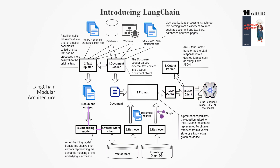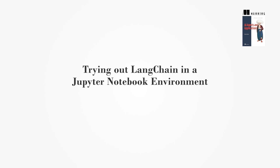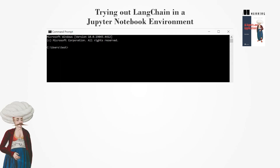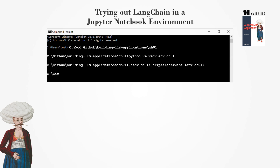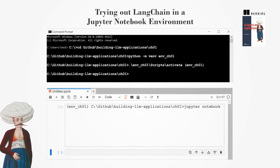LangChain's design is based on a set of standard interfaces, which enables developers to create applications using both pre-built and custom components. At the heart of LangChain is its core object model, which organizes the components and their interactions. This model includes classes for managing documents, handling data retrieval, and interacting with LLMs. A practical implementation of LangChain can be demonstrated by setting up a development environment and running simple tasks in a Jupyter notebook.